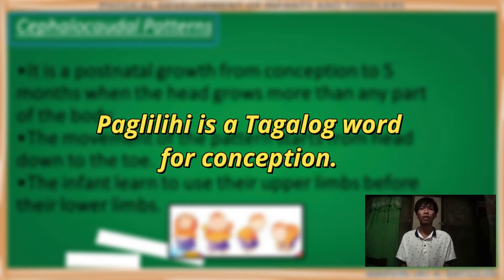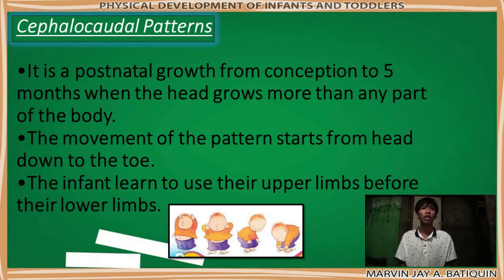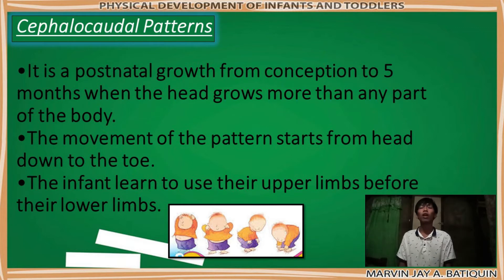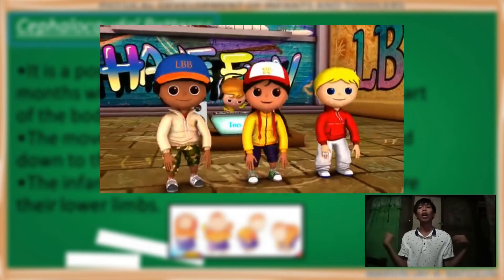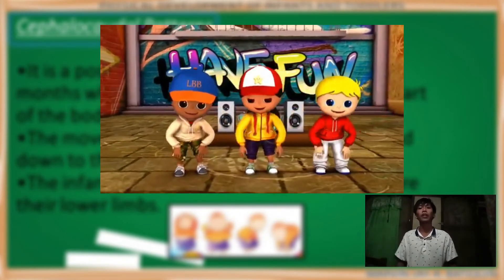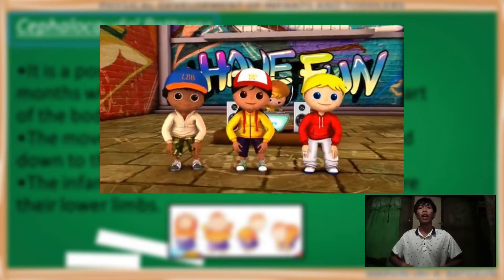Paglili is a Tagalog word for conception. It is very important to give attention to a woman during her nine months of pregnancy, as it is part of the process. The pattern of cephalocaudal development moves from the top to the bottom of the body — for example, from head, neck, shoulder, arms, and hips, and so on.